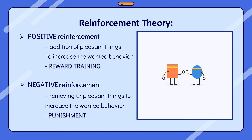Operant conditioning is used in shaping undesirable behavior and in modification of behavior. It is also useful in training mentally retarded children to learn dressing, eating, and toilet training skills, treatment of phobias, drug and alcohol addictions, psychotherapy, and teaching needed behavior in children. These experiments have proved that intermittent reinforcement yields better results than continuous reinforcement.